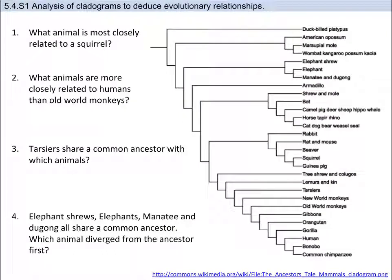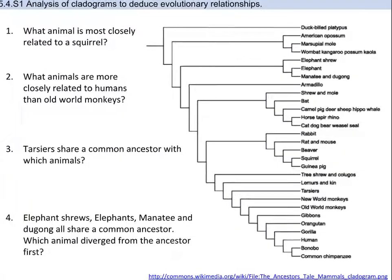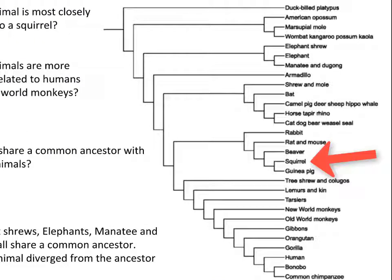We have already looked at a cladogram and analyzed it, but this is a skill you must be able to do. You need to analyze a cladogram and determine the evolutionary relationship between species, as well as discuss the use of cladograms as hypotheses of evolutionary relationships. Looking at this cladogram with four questions: first, what animal is most closely related to the squirrel? If you said guinea pig, you are correct — squirrels and guinea pigs share a common ancestor at the node and are therefore in the same clade.